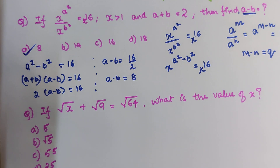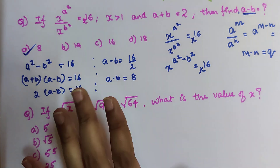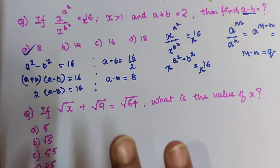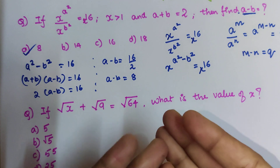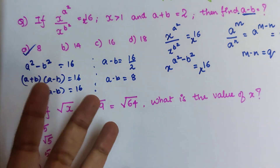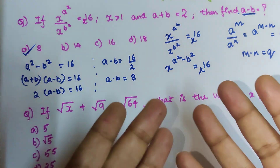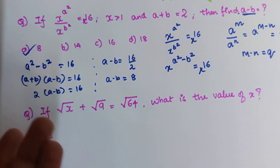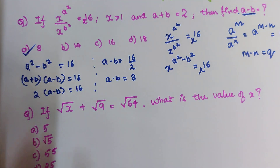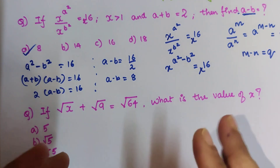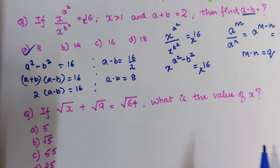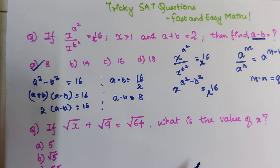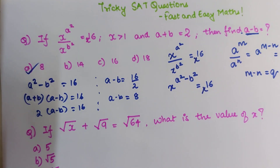You saw how easy this entire problem became simply because of a clear understanding of indices. Apart from indices, there are a few formulas you need to know well: a² − b², (a + b)², (a − b)², (a + b)³, (a − b)³, a³ − b³, and a³ + b³. All of these formulas are really important for cracking these exams. If you like the way I'm explaining, please hit the like button — it gives me tremendous encouragement.